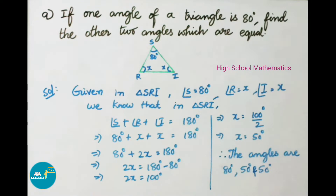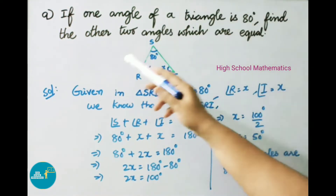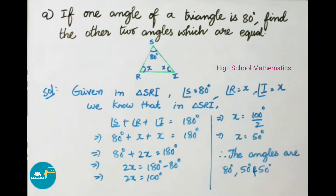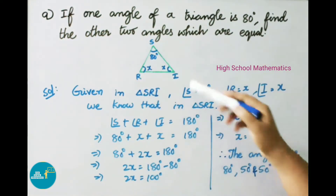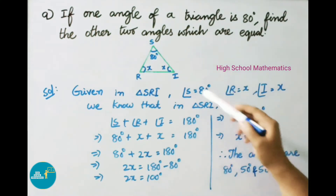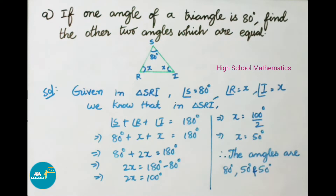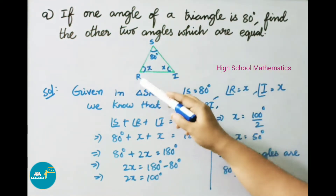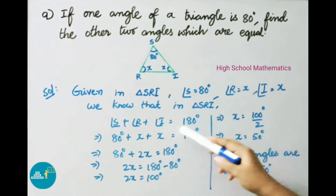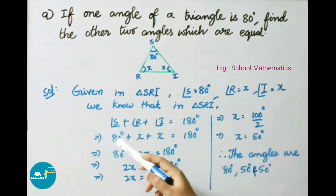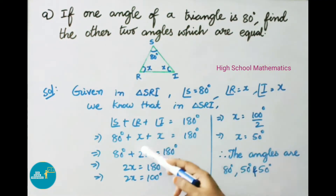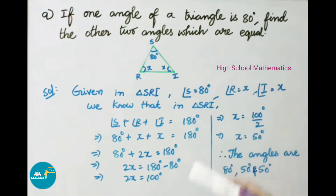Question number 9: If one angle of a triangle is 80 degrees, find the other two angles which are equal. In triangle SRI, angle S equals 80 degrees, angle R equals x, and angle I equals x. We know in triangle SRI the sum of interior angles is 180 degrees. So angle S plus angle R plus angle I equals 180 degrees: 80 degrees plus x plus x equals 180 degrees.